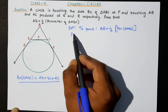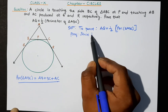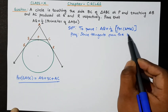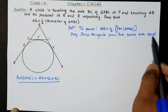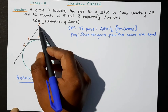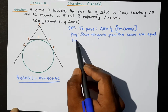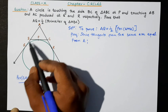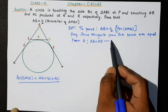Proof: We will use the theorem that tangents from the same point are equal. From point A, we have tangents AQ and AR, so AQ equals AR — this is equation 1.